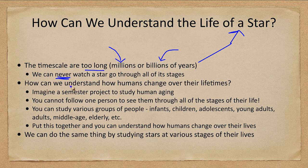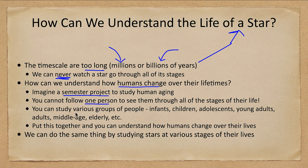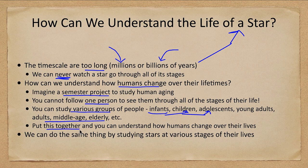We can look at this similarly — how can we understand how humans change over their lifetimes? If you were doing a semester project to study human aging, you could not follow one person through all of the stages of their life. However, you could study various groups from infants to children, adolescents, young adults, middle-aged, elderly, and so on. You could put this together and still understand how humans change over the course of their lives, even though you're not studying any one individual person.